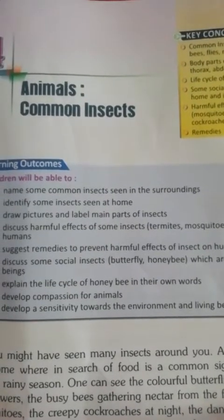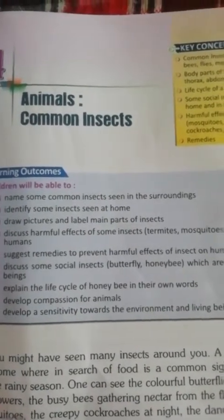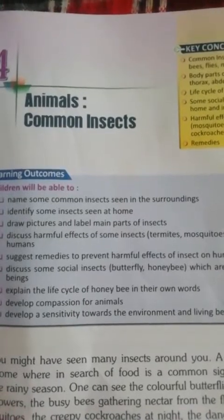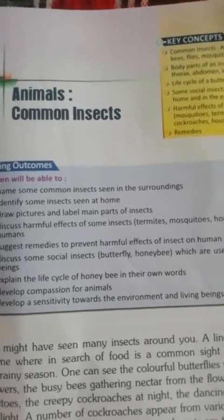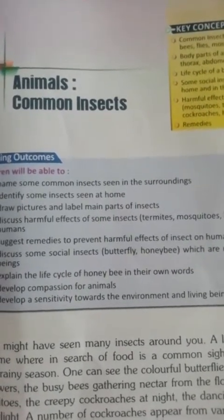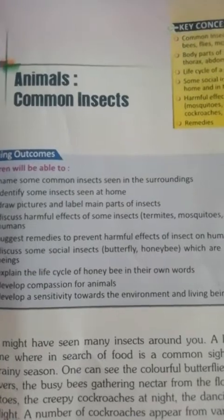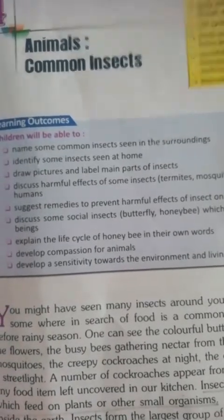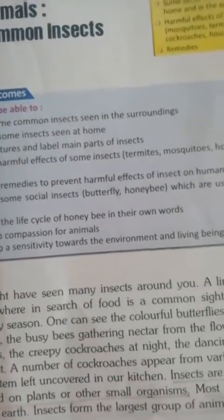So children, what are insects? Insects are small animals. Like other animals such as birds, insects are also small animals and they depend on plants and other small organisms. Most of the insects live inside the earth — they make their homes under the soil.